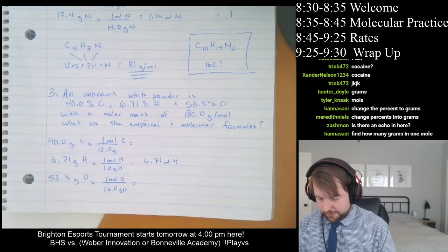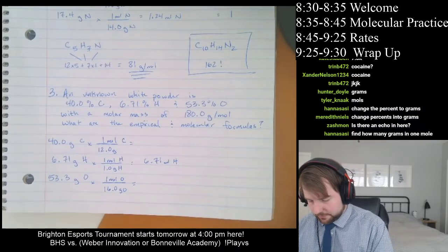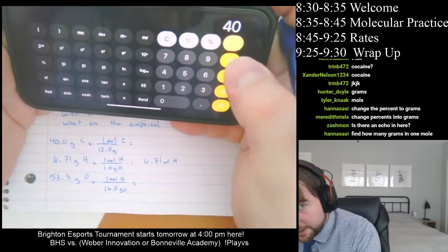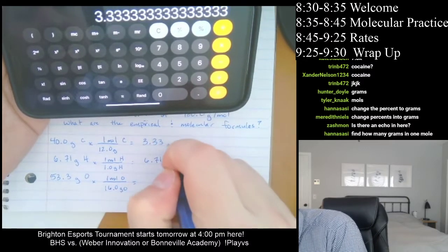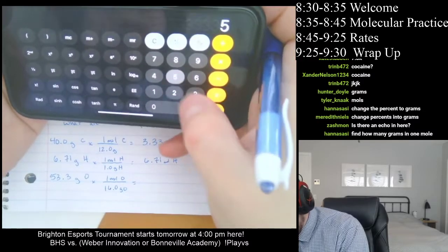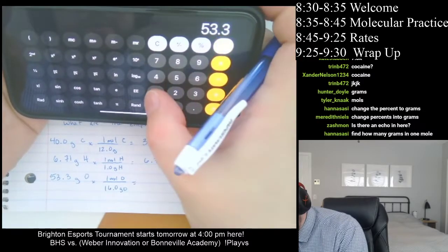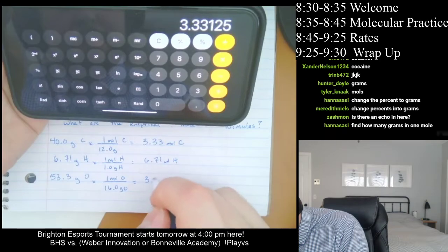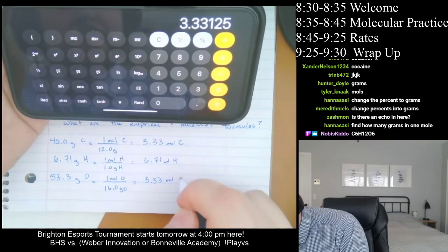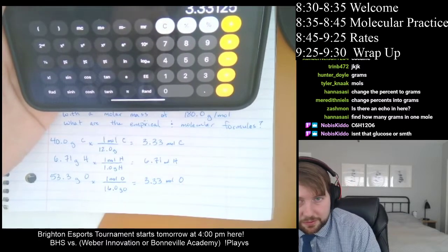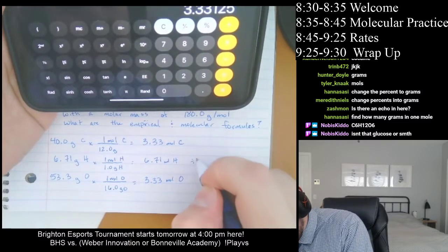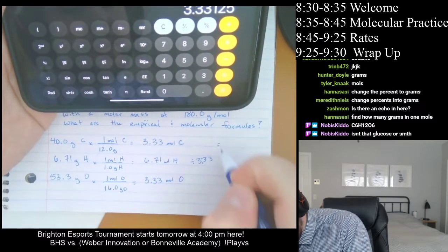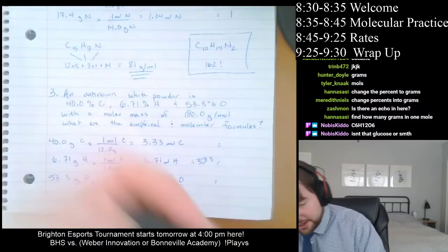For the others I need my calculator. 40 divided by 12 gives us 3.33 moles of carbon. Then we divide by the smallest value, which is 3.33. So we divide them all by 3.33 and we get 1, 2, 1.